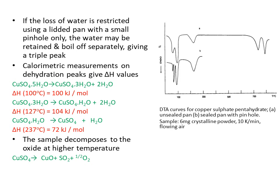The third peak corresponds to removal of the final water molecule, converting copper sulfate monohydrate into copper sulfate at 237 degrees centigrade, with ΔH = 72 kJ/mol. The last peak, which appears at high temperature, corresponds to decomposition of copper sulfate to copper oxide with emission of sulfur dioxide and oxygen gas.